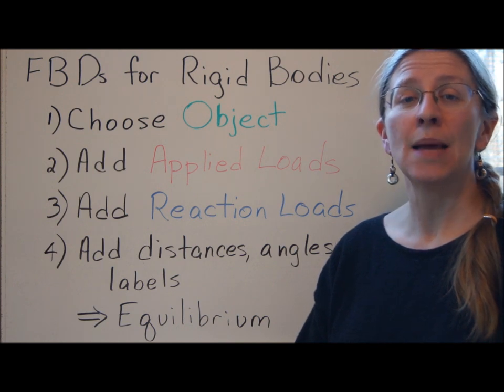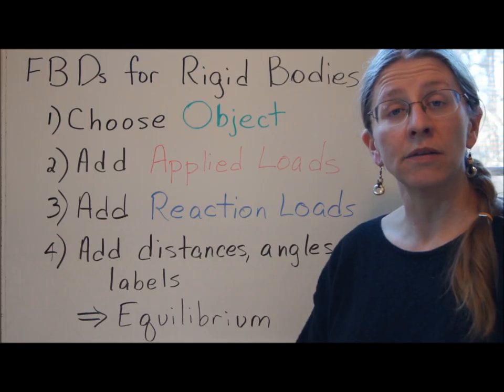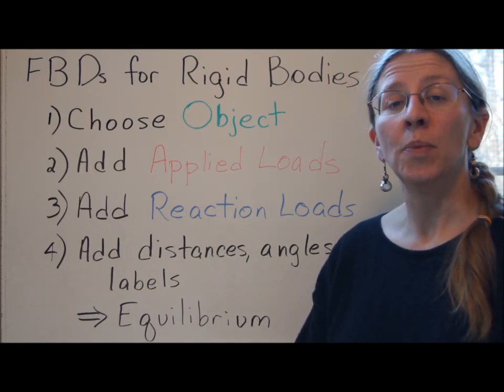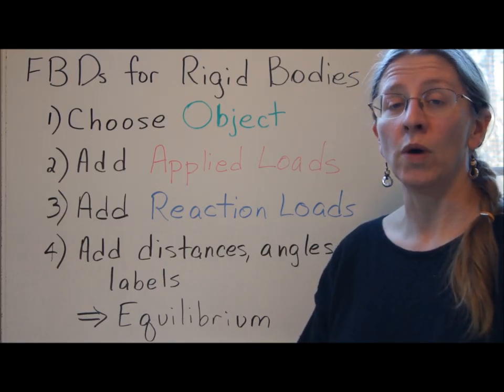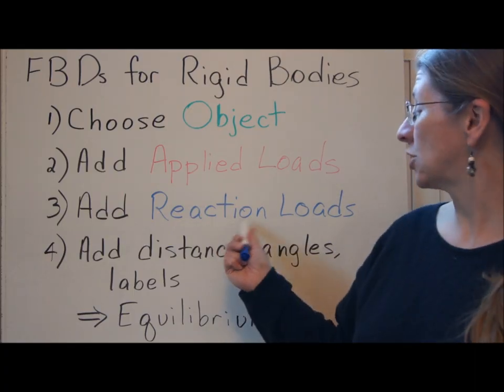The third step is to add reaction loads. A free body diagram is separated away from the rest of the world. So if you have a box sitting on the table, you're going to take the table away and just consider the box. But the table was holding the box up, so we need to replace the table with whatever loads were constraining the object before. Those are reaction loads.